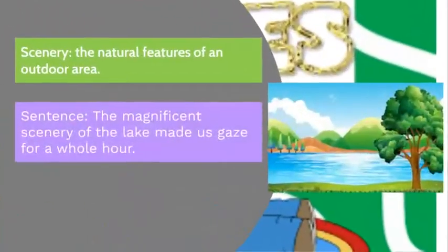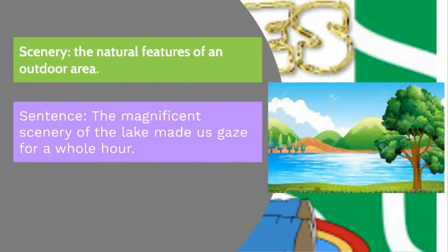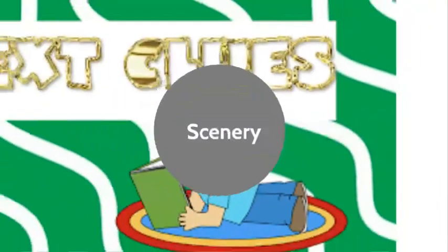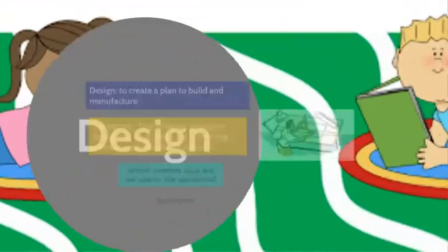Moving on to the word 'scenery.' Scenery is the natural features of an outdoor area. Here's a sentence: 'The magnificent scenery of the lake made us gaze for a whole hour.' So scenery means natural features of an outdoor area.